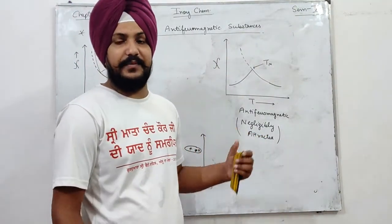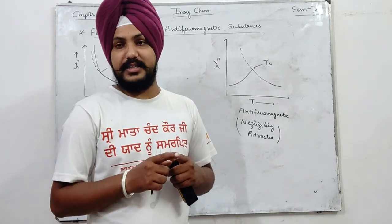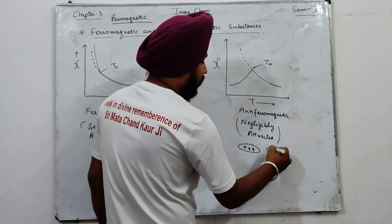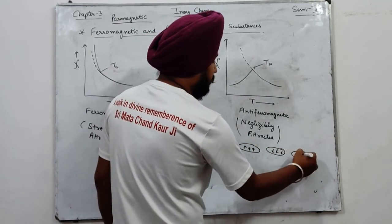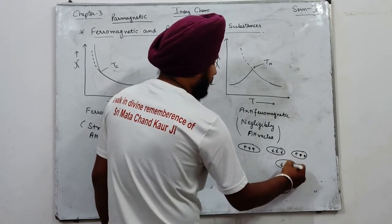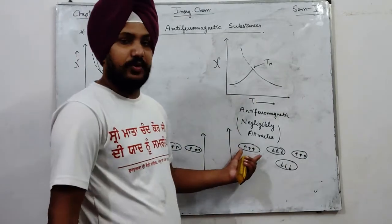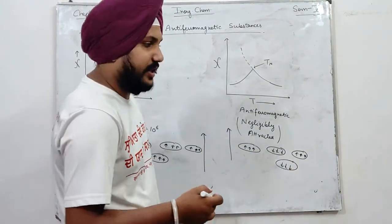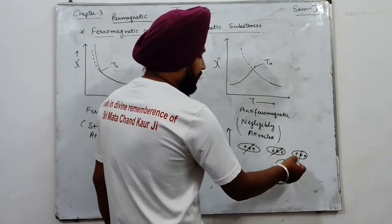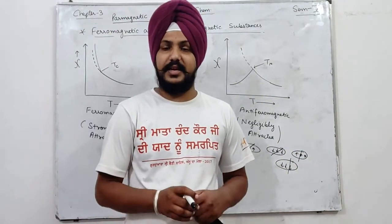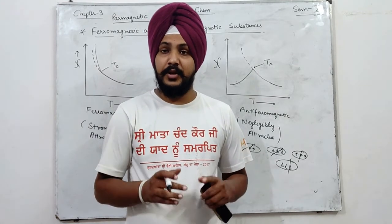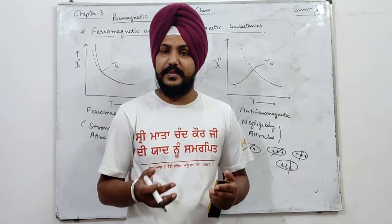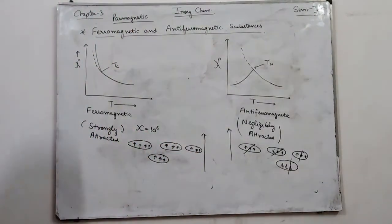Anti-ferromagnetic substances में भी dipoles होते हैं, लेकिन जब हम external field लगाते हैं तो कुछ dipoles with the direction align हो जाती हैं और कुछ dipoles opposite to the direction align हो जाती हैं। जिस direction में external magnetic field apply किया, कुछ dipoles उस direction में align हुए और कुछ opposite direction में। इससे एक dipole दूसरे dipole की magnetic property cancel कर देता है।